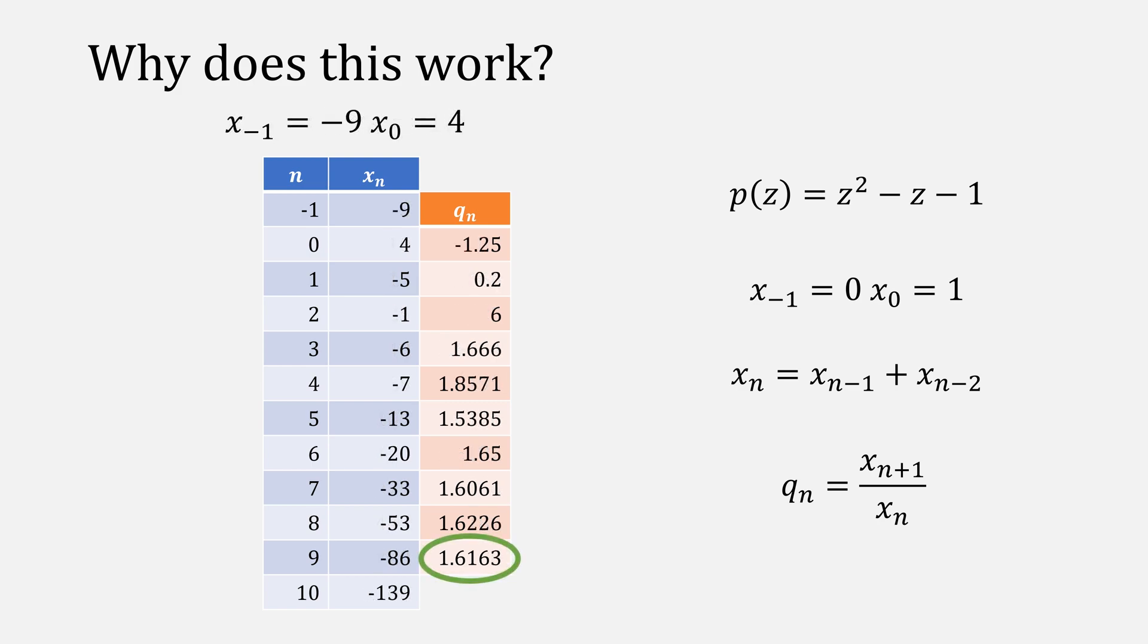Even if we pick numbers that weren't in our Fibonacci sequence, like negative 9 and 4, we'll still get our largest root.